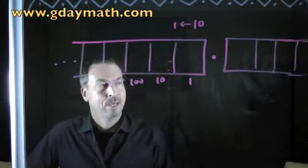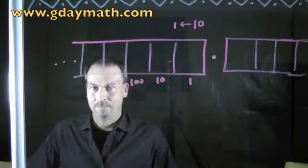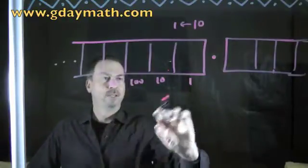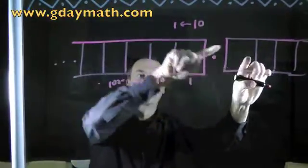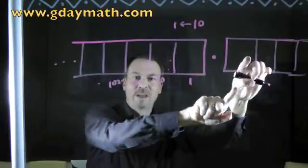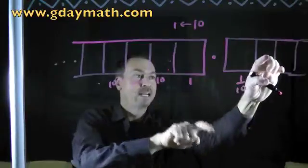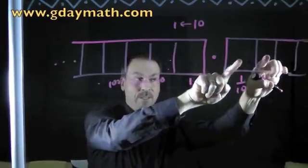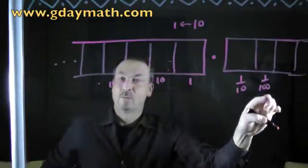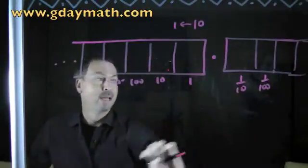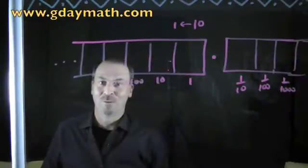Now we've got some boxes going to the right as well. What should the values of these boxes be? Well, it's a 10-1 machine, so 10 dots in any one box explode and become one dot one place to the left. So 10 of these guys better make one of those. If 10 of it makes one, this better be one-tenth. And 10 of these guys make one of those, so these better be one-hundredths. 10 one-hundredths is indeed one-tenth. These better be one-thousandths, then ten-thousandths, and so forth.